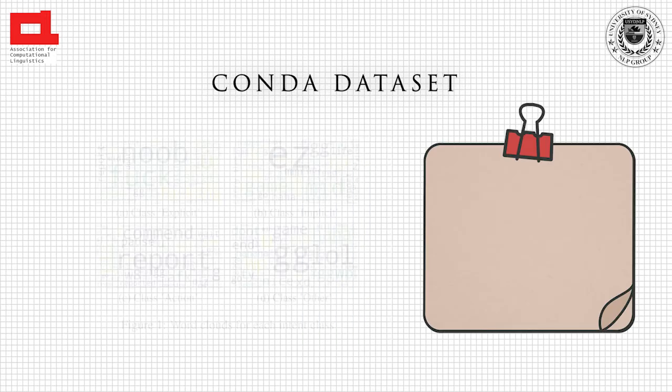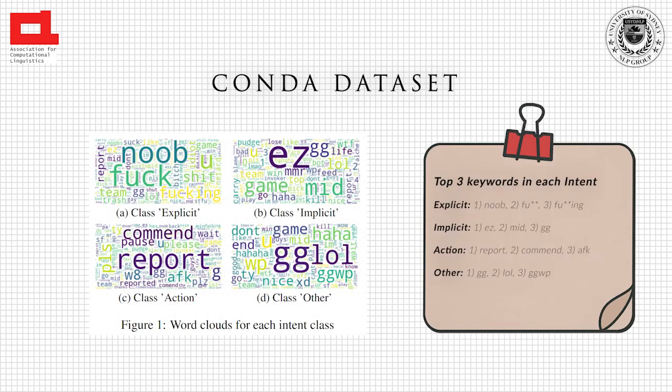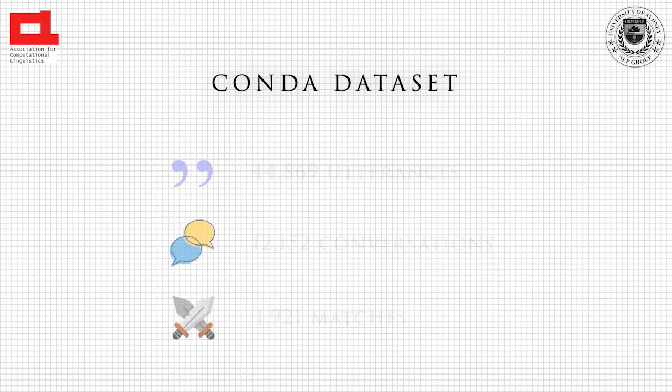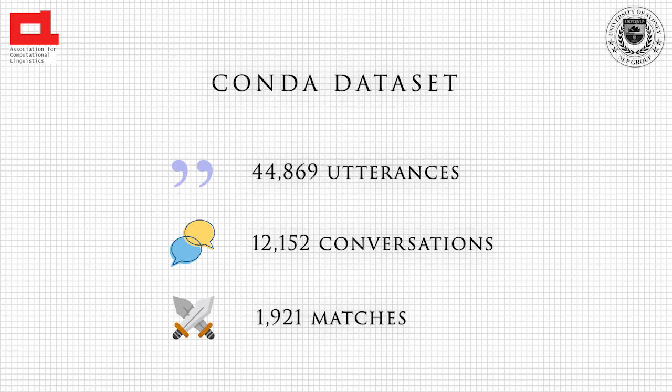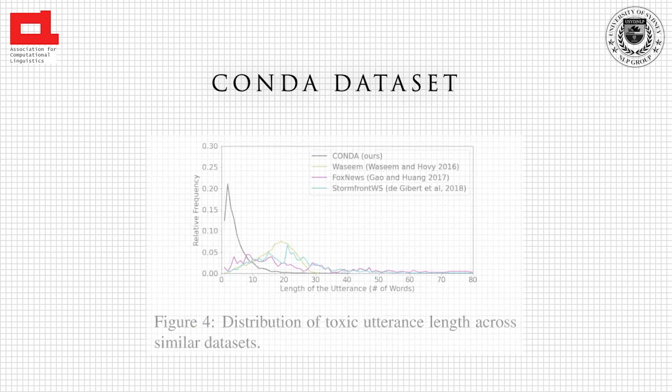We can observe the frequency trend in the figure, and 'EZ' got the prominent position in the intent labels, and 'GG' appeared in all combinations. This indicates slangs are largely used in games, which is totally different from the general toxicity domain. The CONDA dataset consists of 45k utterances, 12k conversations, and almost 2,000 matches.